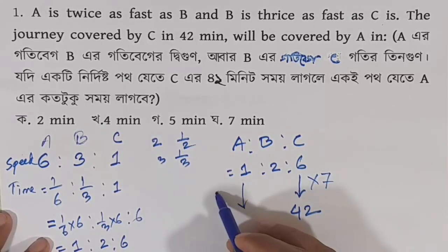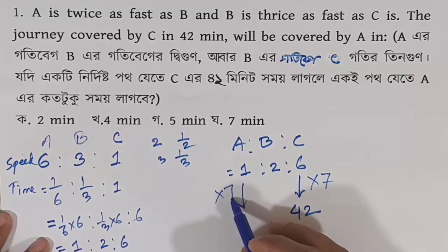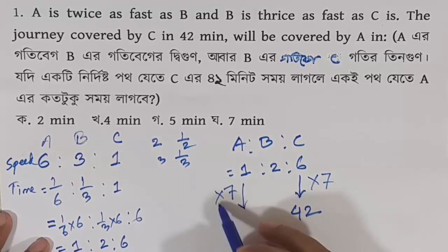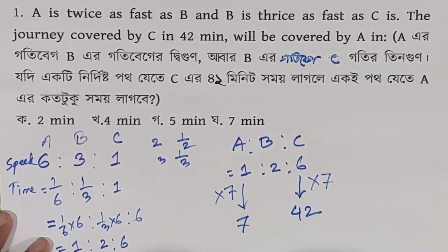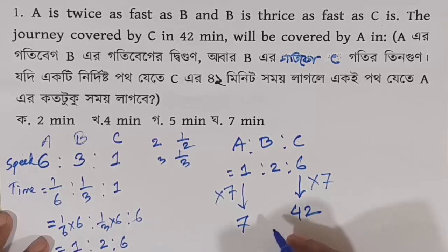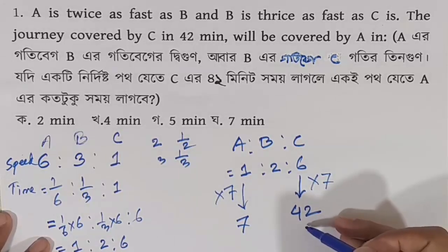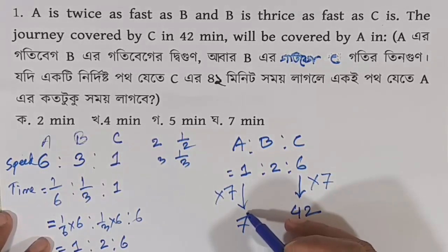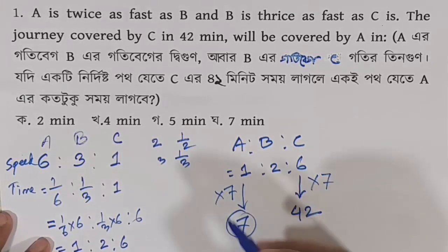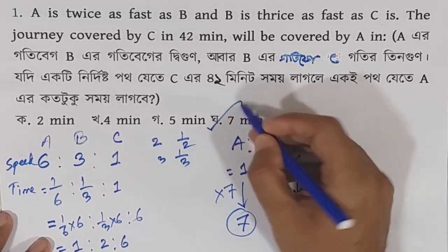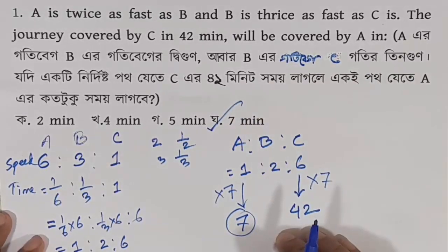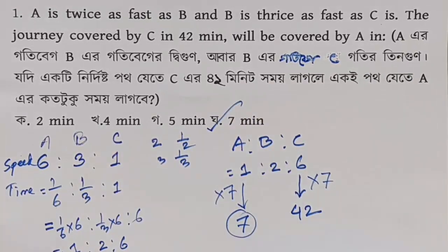B is 42 minutes corresponding to 6 units. So 6 units equals 42 minutes, meaning 1 unit equals 7 minutes. Therefore A, which corresponds to 1 unit in the time ratio, takes 7 minutes. This is the answer — A covers the same journey in 7 minutes.